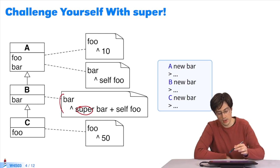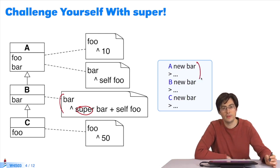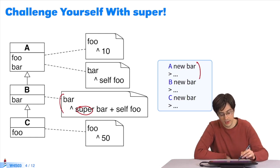Let's think about what happens. For a new bar, there's no problem. It's the same process as before. The method is run and foo returns 10.